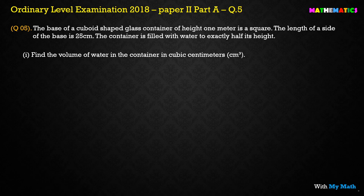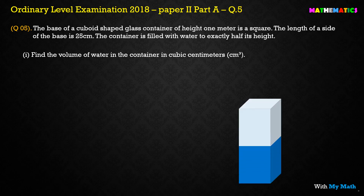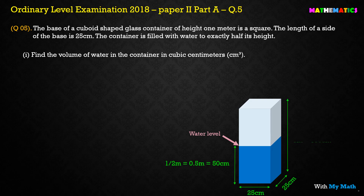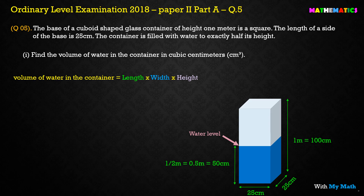I have drawn a picture for you. The water level is shown at 50 centimeters, the length is 25, width is 25, and the full height of the container is 100 centimeters, which equals one meter. We are asked to find the volume of water up to the water level, so I write the formula: volume of water in the container.